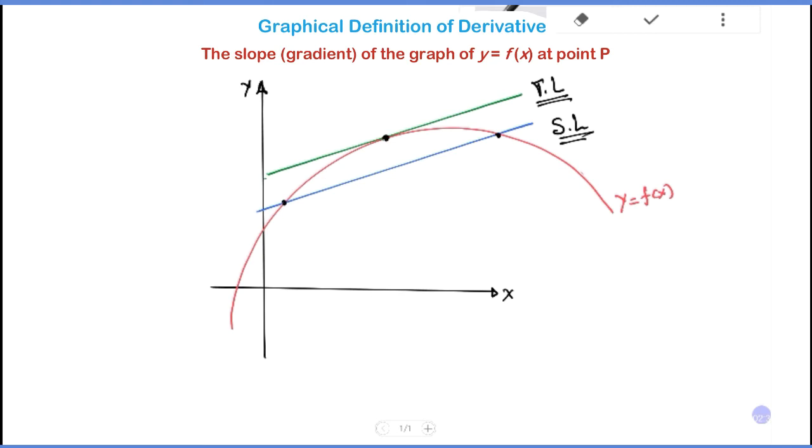The slope of the tangent line at point P is the slope of the function at point P. This point is the tangent line at point P, which is the slope of the function at point P.